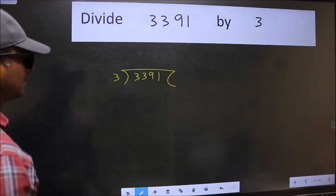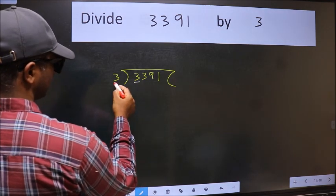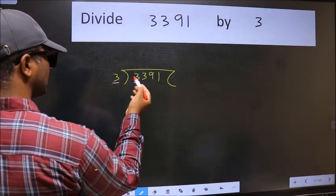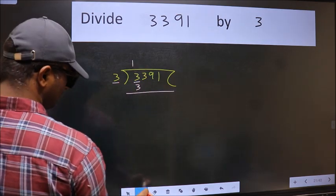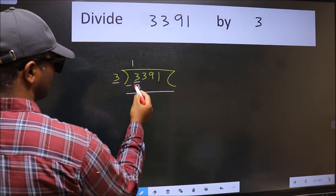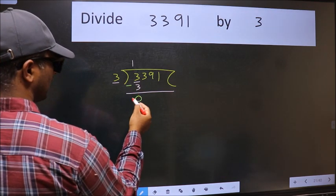Next. Here we have 3 and 3 here. When do we get 3 in 3 table? 3 once 3. Now we should subtract. We get 0.